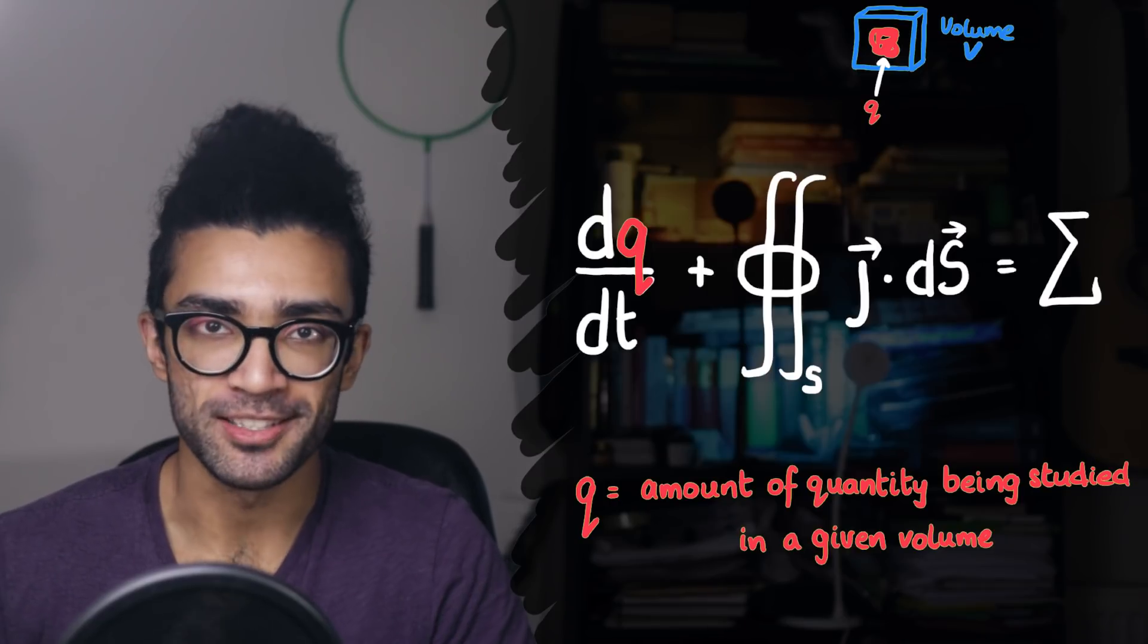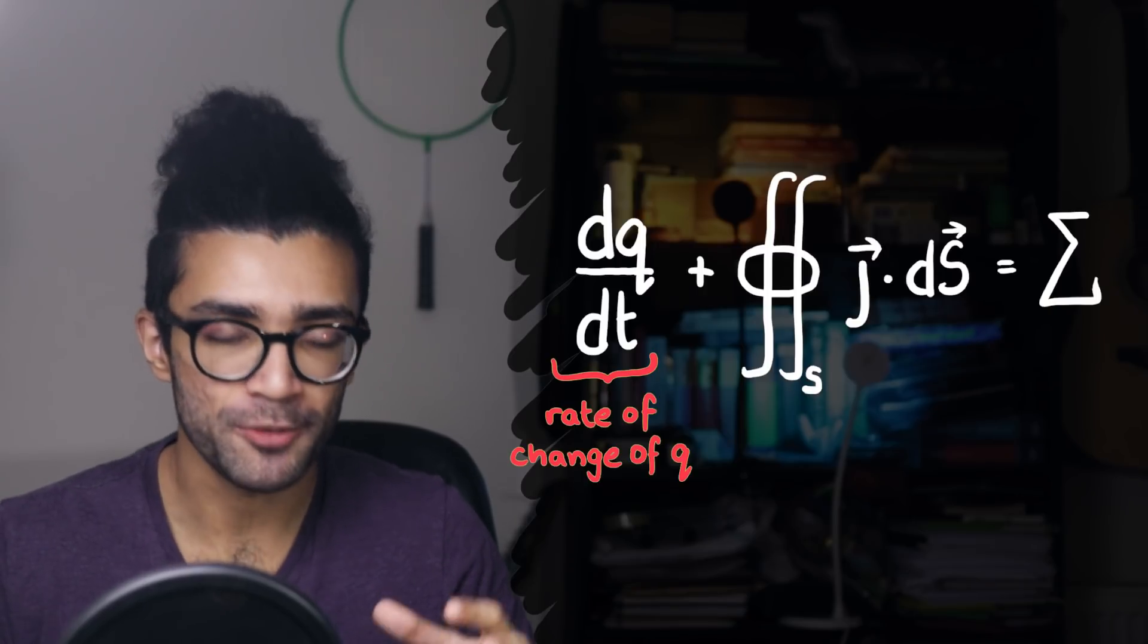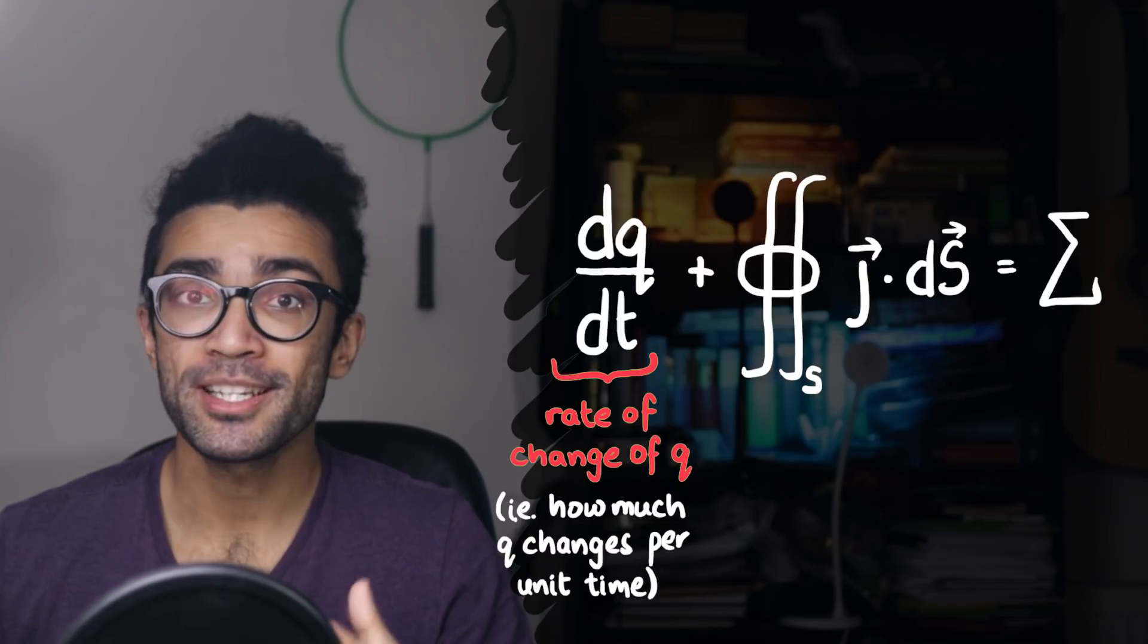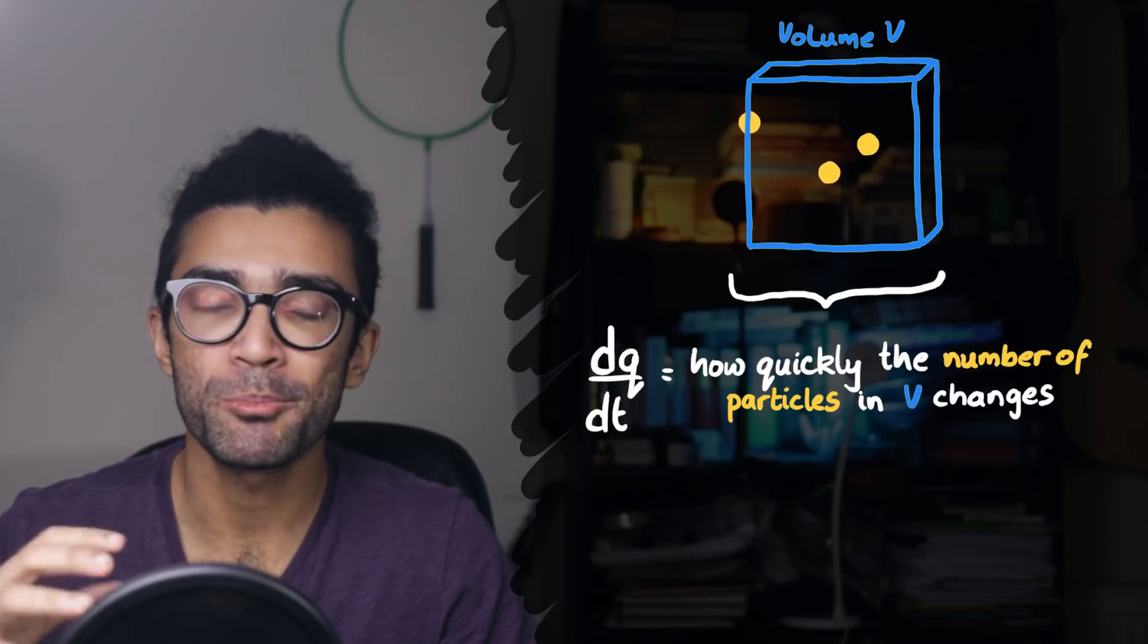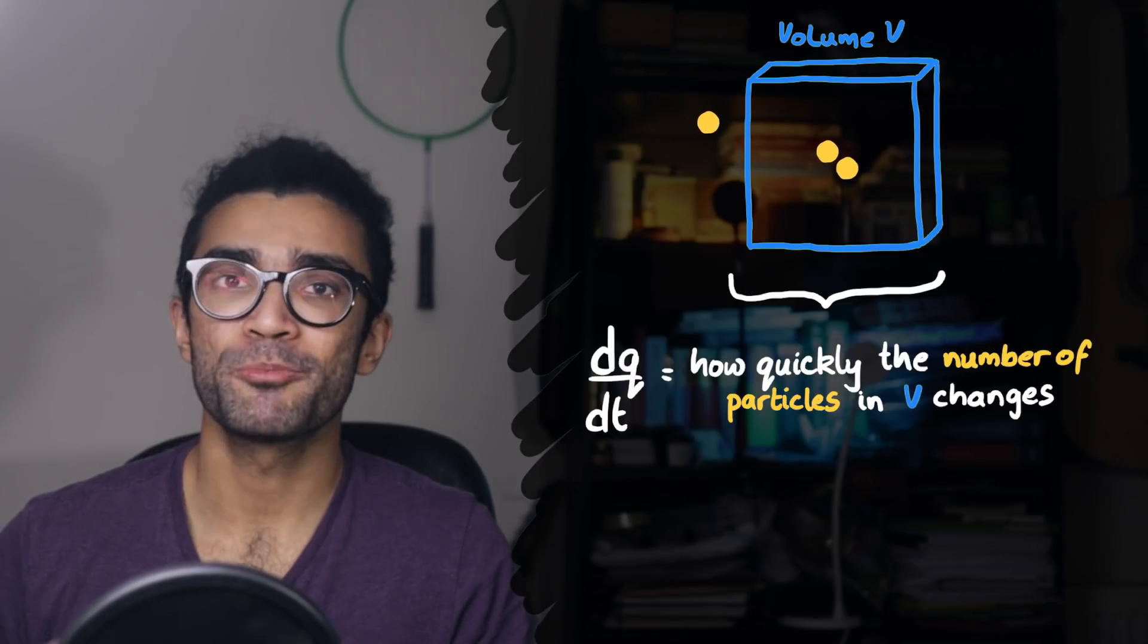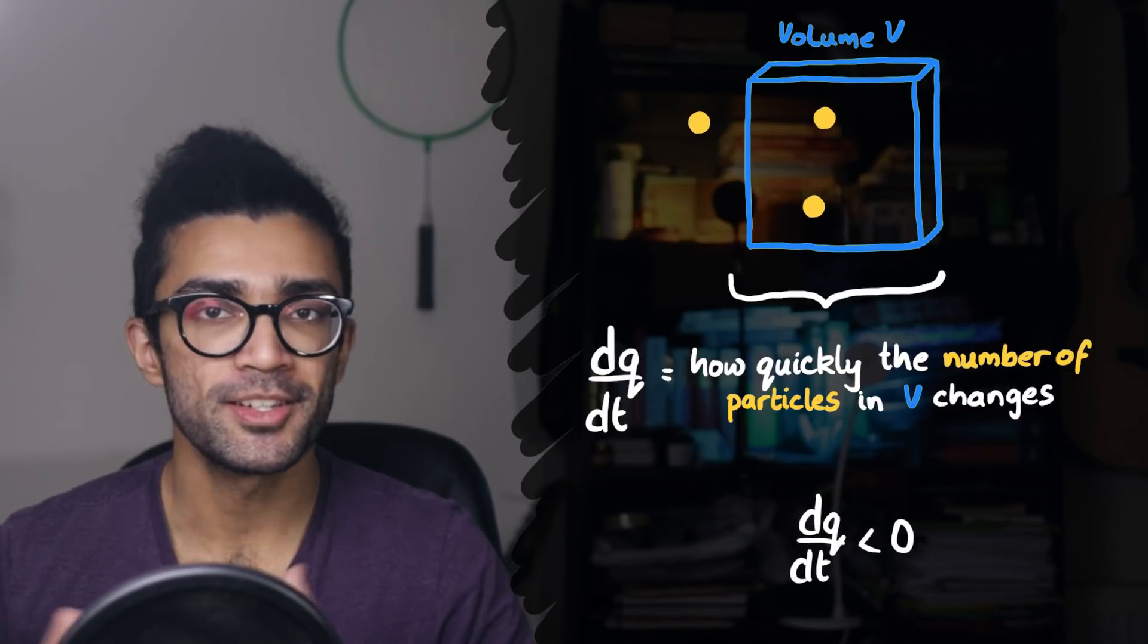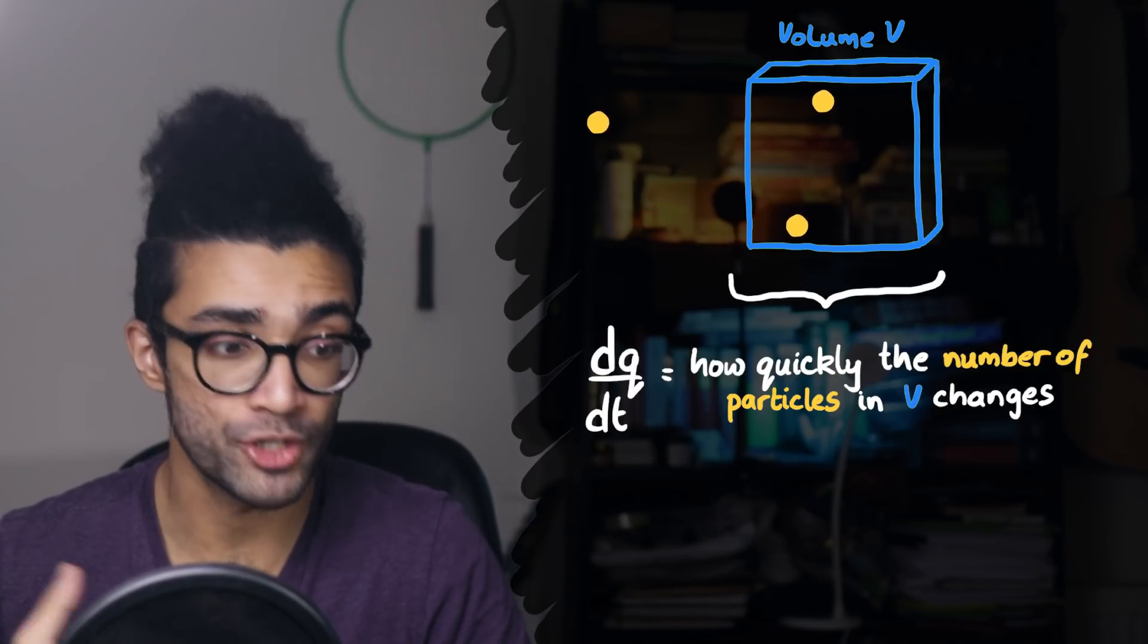For those of you familiar with calculus, you may have spotted that this term, dQ by dt, is simply measuring the rate of change of this amount of stuff. In other words, how much this stuff changes per unit time. If we stick with particle flow for now, then dQ by dt simply represents how the number of particles in our region of space changes per unit time. If the number of particles in our region increases over time, then dQ by dt is positive, and if it decreases, then dQ by dt is negative. This term essentially measures how quickly the number of particles in our region changes with time.